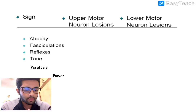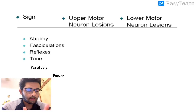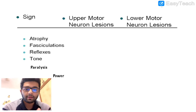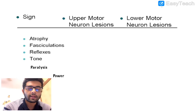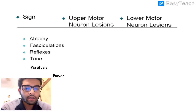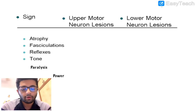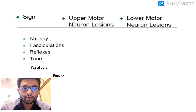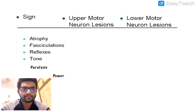It's important to distinguish UMN from LMN clinically. If LMN-type symptoms are seen, we think about peripheral nerve disease or spinal cord disease. If UMN-type lesions are seen, we consider stroke or something above the spinal cord level — above the alpha motor neuron. This distinction also plays an important role in motor neuron diseases.